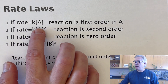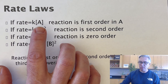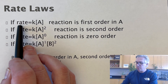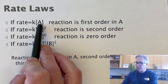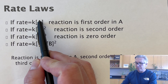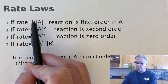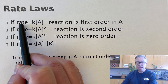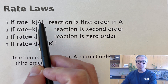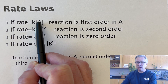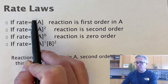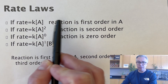We're going to use A as some generic reactant. If the rate law is written as rate equals the constant times A to the exponent of 1, that means A to the 1 is just A. And because K is a constant, the rate of reaction is actually proportional to the concentration of A at any given time. That would be a first-order reaction.